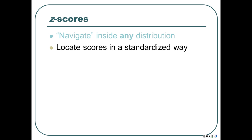If you say I study three more hours than average, which is a Z-score of plus 0.5 — one half a standard deviation above the mean of all people's studying — then a person should not be very impressed. But if that's a Z-score of positive 4, four standard deviations above the mean, you should be extremely impressed, because that's a big difference.